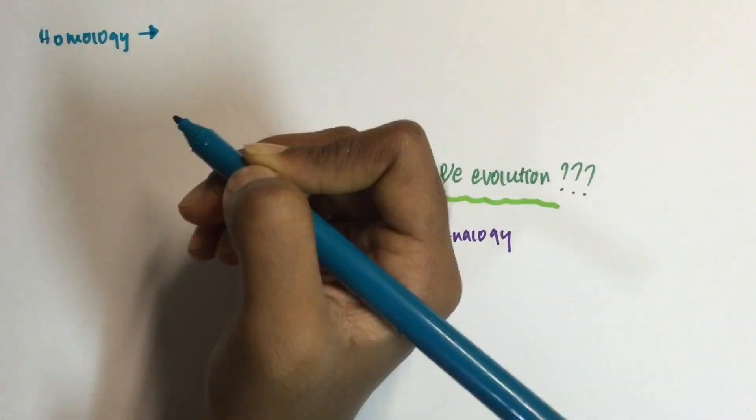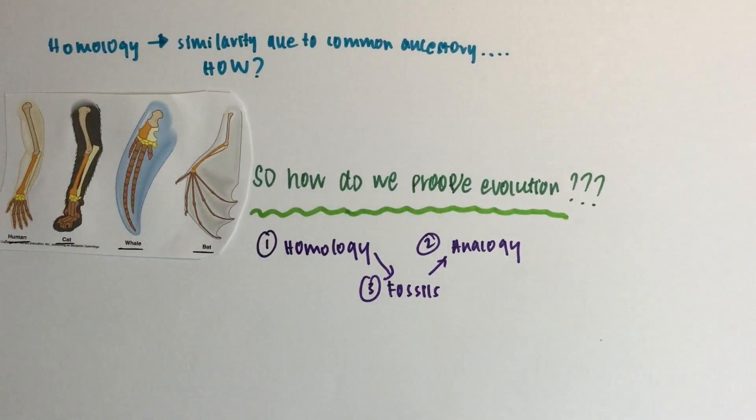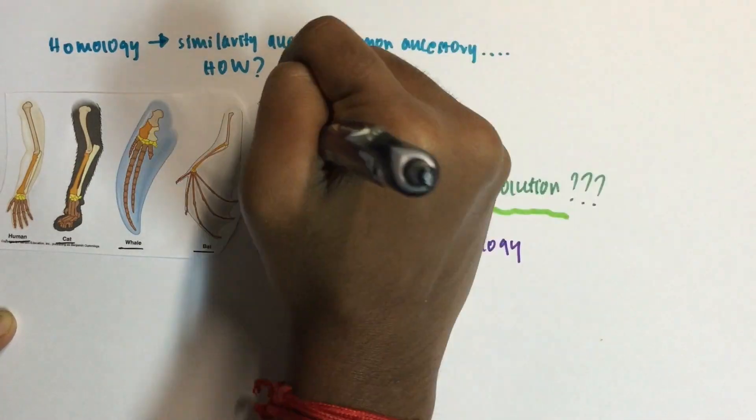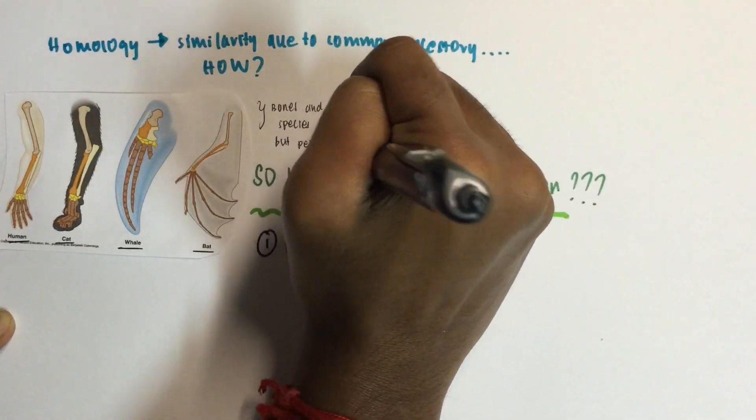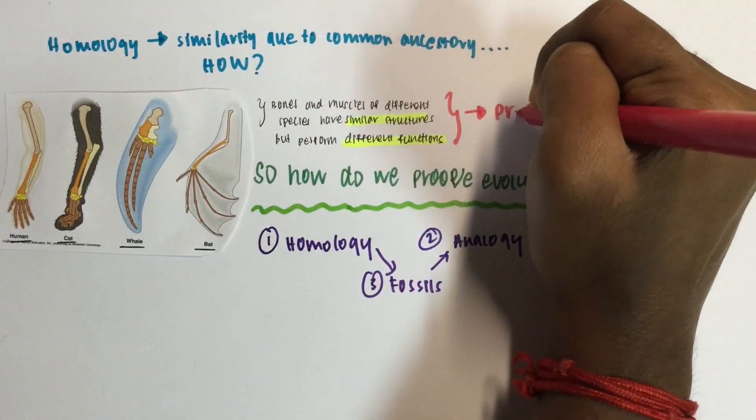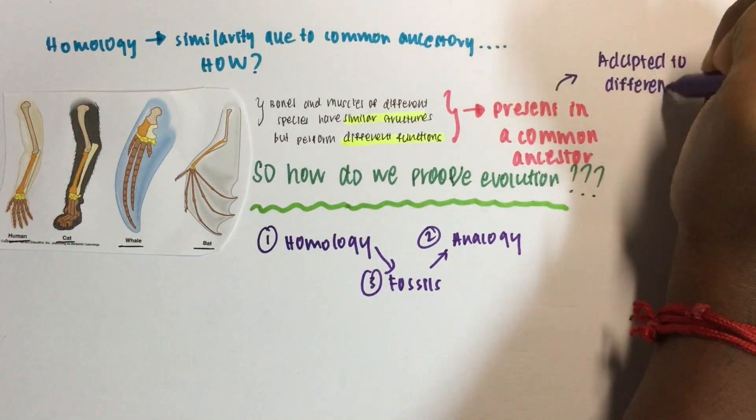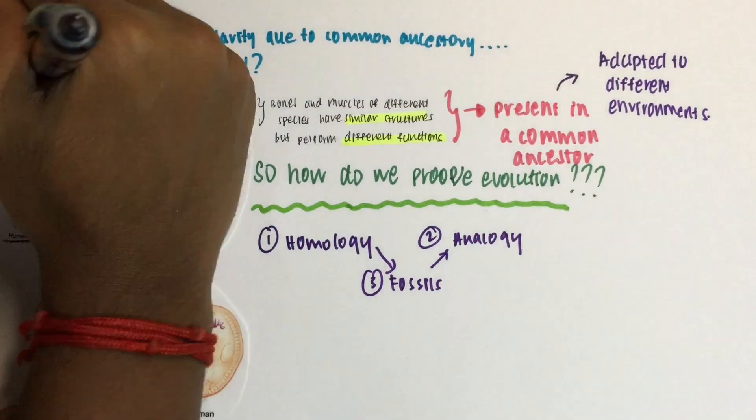So what exactly is homology? On a more fundamental level, it is a similarity due to common ancestry. If we look at the four limbs of the organisms present here, there is a fundamental similarity in the structure, although they have different purposes and functions. So we say that they have a common ancestor, which results in them being homologous structures.